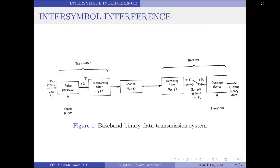Continuing, the pulse amplitude modulated signal X(t) is then passed through a transmitting filter which has a transfer function HT(f). The output of the transmitting filter is the signal that will be transmitted through the channel. The channel itself has a transfer characteristic HC(f), and the transmitted signal may be modified during transmission. We will assume that the major source of degradation in the channel is dispersion.